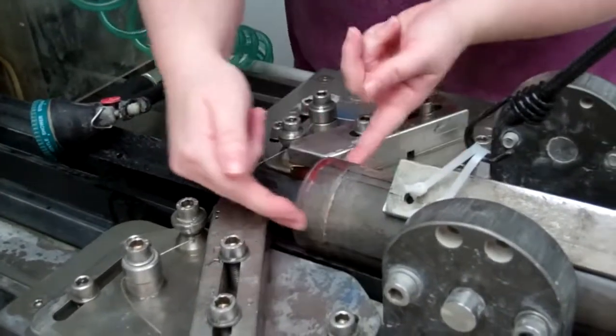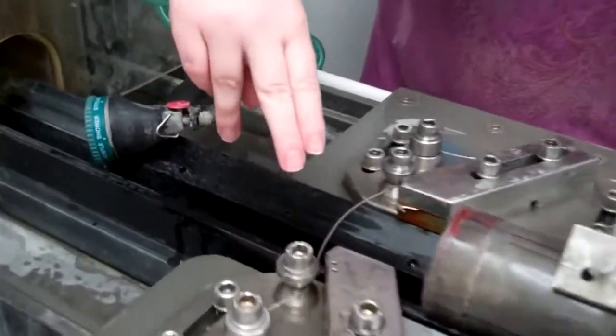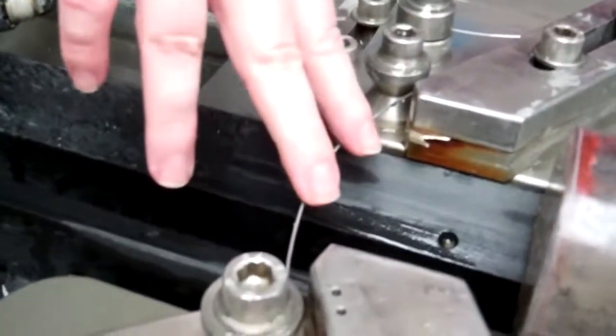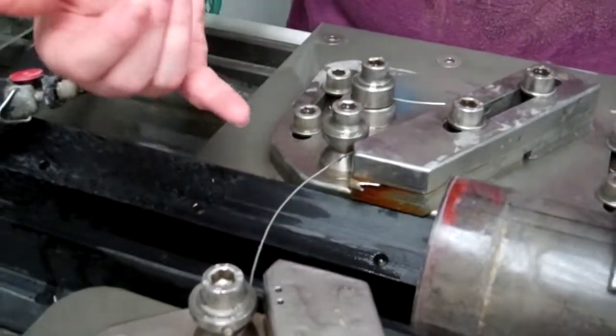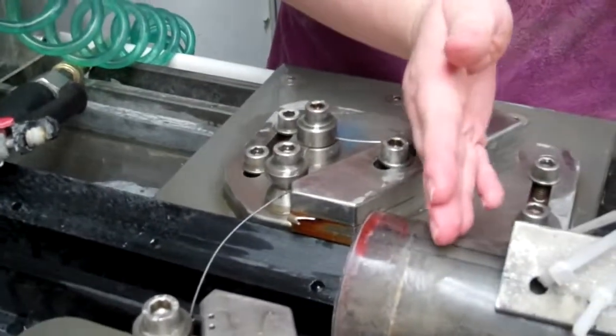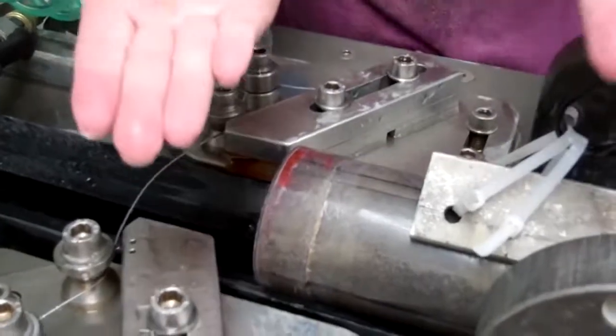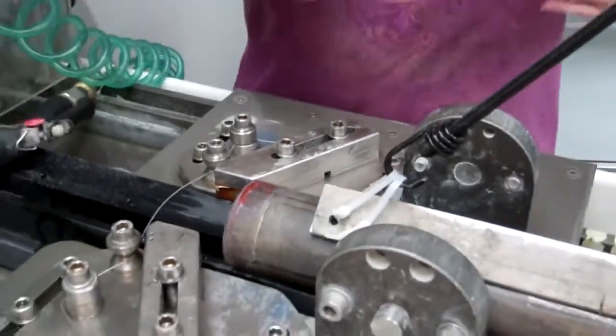And it will split the liner in half so that we can split it apart. And this right here is, we call it the cheese wire, but it's technically, I think, a heavy-duty piano wire material. And this is the material that will actually cut the core itself in here. And it will perfectly divide the core in half so that we can fold it open, and so that the scientists can have one half to sample and one half to describe.